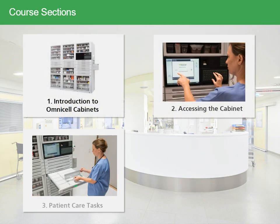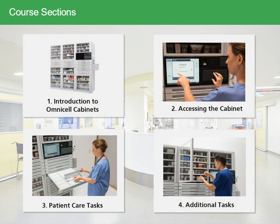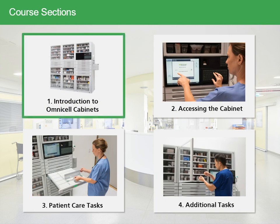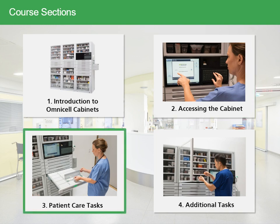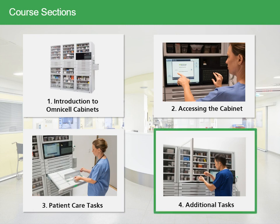This course is divided into four sections. The first section is called Introduction to OmniCell Cabinets, where you'll learn about OmniCell cabinets and other hardware you may encounter at your facility. Next, we'll cover various ways of accessing the OmniCell cabinet. The third section, called Patient Care Tasks, covers removing, returning, and wasting medications. The last section focuses on additional tasks such as inventory cycle counts or simple reporting.